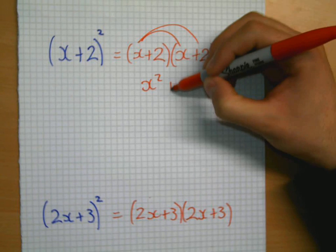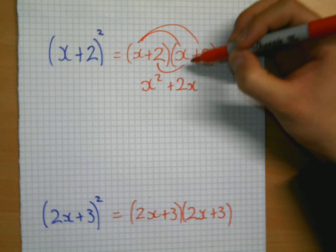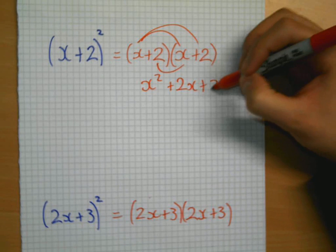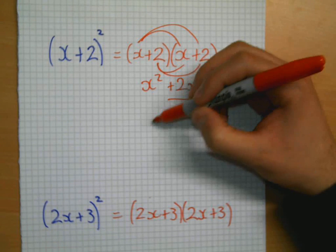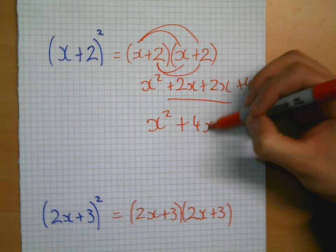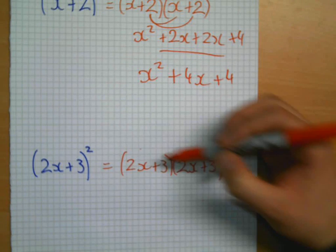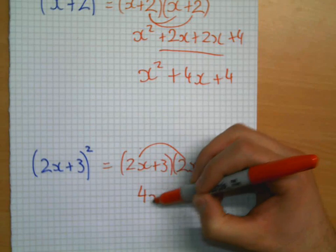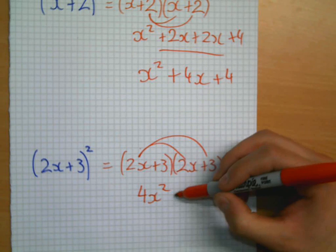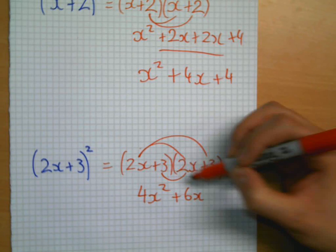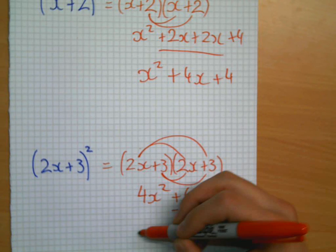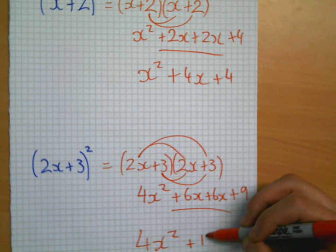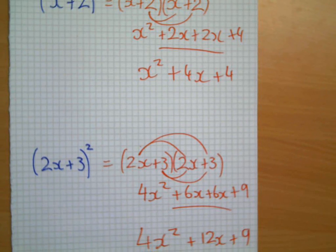So, what we will get here, x times by x, x squared. x times by 2, positive 2x. 2 times by x, positive 2x. 2 times by 2, positive 4. Collect the like terms: x squared plus 4x plus 4. And here, 2x times by 2x is 4x squared. 2x times by 3, positive 6x. 3 times by 2x, again, positive 6x. 3 times by 3, 9. Collect the like terms: 4x squared plus 12x plus 9.